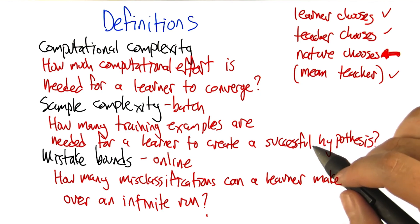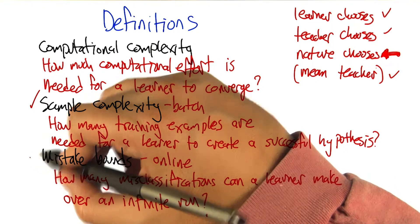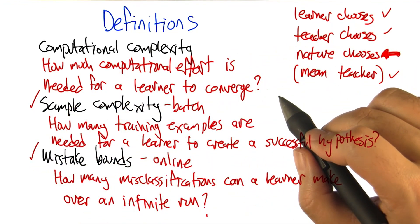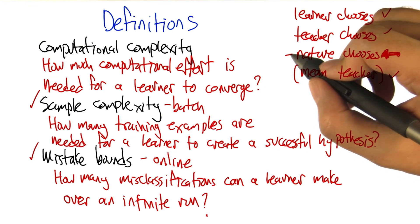But the important thing here is that we're not going to talk about computational complexity, for the most part. We're going to focus on sample complexity for the time being. And that's really the relevant concept when we're talking about the idea of nature choosing.